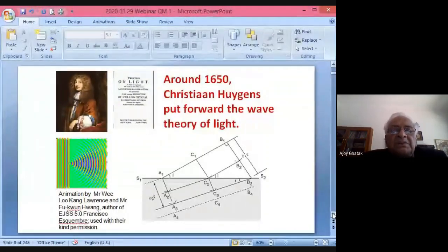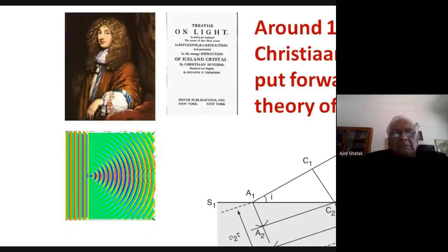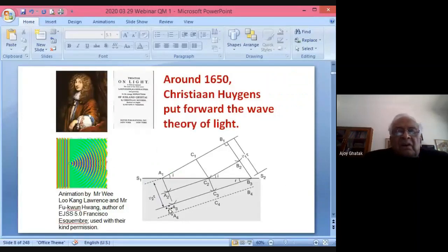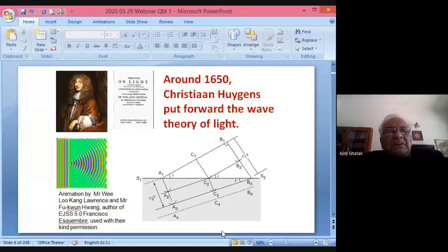Christian Huygens put forward the wave theory of light — a small animation shows the wave coming out from an orifice. He studied refraction of light and derived Snell's law. But Isaac Newton had such a towering personality that people believed more in Newton rather than Huygens, and so the wave theory got suppressed.